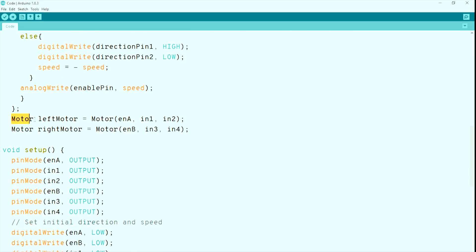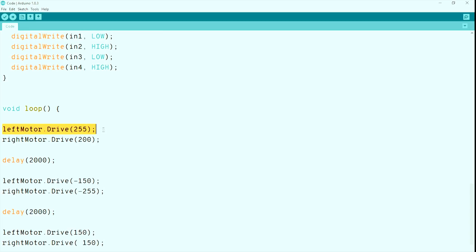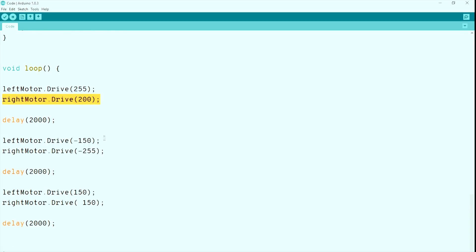Once we have the two motors defined before the setup, we can control the speed and direction with one line of code just using the drive function. You can make your own functions by combining multiple motors too. The full code can be found in the description.